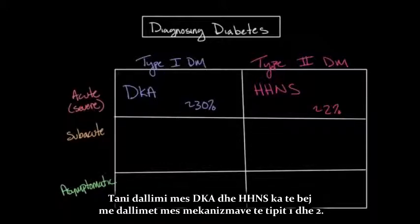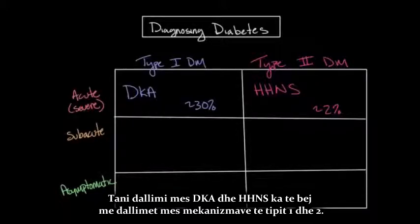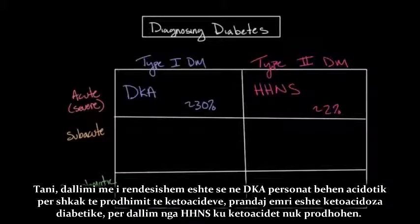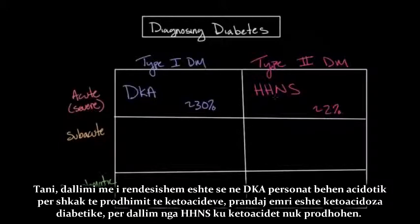The difference between DKA and HHNS has to do with the difference between the underlying mechanisms of type one and type two diabetes. The most important difference is that in DKA, the individual will become acidotic due to the production of ketoacids — hence the name diabetic ketoacidosis — as opposed to hyperosmolar non-ketotic state, where ketoacids are not produced.